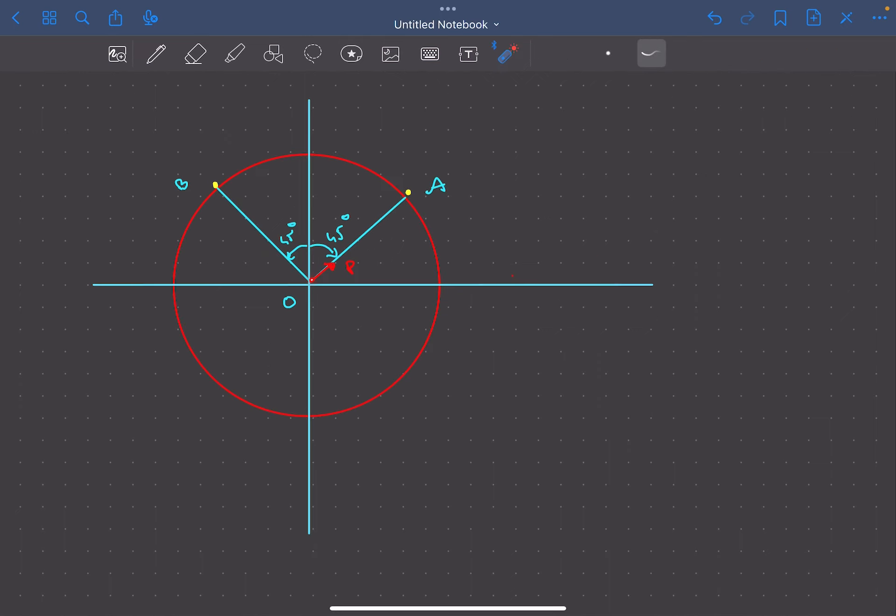In the problem, the dipole is aligned along the direction OA. Point A in the circle is along the axial direction of the point dipole, which means the electric field due to the dipole at point A will have a magnitude of 2kp/R³ and its direction will be along OA.